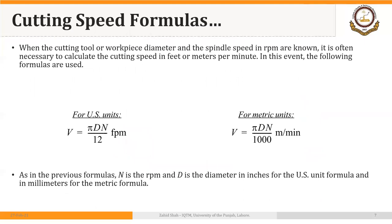Rearranging to V = πDN is easier to understand and interpret. Cutting speed is directly proportional to the diameter — of the workpiece in turning, or the cutter in milling or drilling. For the same RPM, a higher cutting speed will be achieved if the diameter increases. We divide by 12 to convert inches to feet in US units, and by 1000 to convert millimeters to meters in metric units.